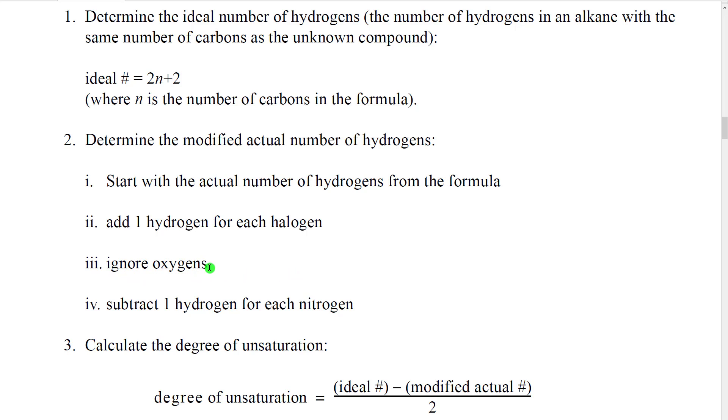If there are any oxygen in the molecule, we can just ignore them, because oxygens can be inserted into a molecule without changing the number of hydrogens and without adding a double bond. In contrast, if there are nitrogens in a molecule, when we insert nitrogens, we add hydrogens because we add more spaces for groups to attach. So what we're going to need to do is subtract one hydrogen for each nitrogen.